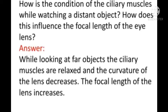First question: How is the condition of the ciliary muscles while watching a distant object, and how does this influence the focal length of the eye lens? Answer: While looking at far objects, the ciliary muscles are relaxed and the curvature of the lens decreases, increasing the focal length of the eye lens.